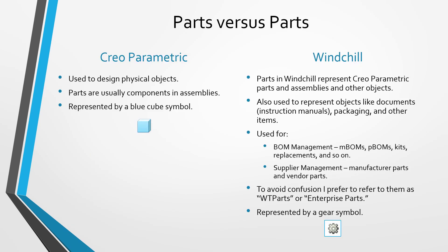There is one confusing aspect if you're using Creo Parametric with Windchill as your CAD data management system. In Creo Parametric you have parts, and in Windchill you have parts, but they're not the same thing. In Creo Parametric you are creating .prt files that represent physical objects, usually placed into assemblies, and they're represented by a blue cube symbol. A Windchill part can represent Creo Parametric parts and can also represent Creo Parametric assemblies.